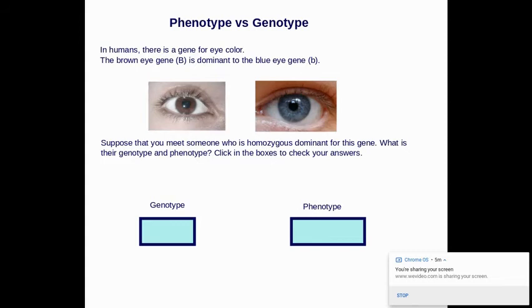In humans, there's a gene for eye color. The brown eye is dominant to the blue eye. So this is big B. This is definitely little b, little b. The only way you could have blue eyes is if you had little b, little b, two recessives from both parents.